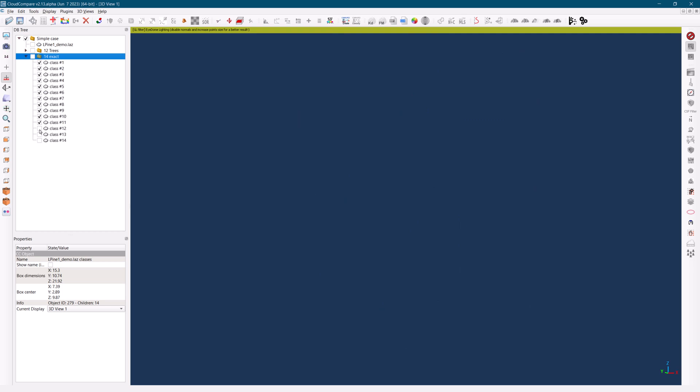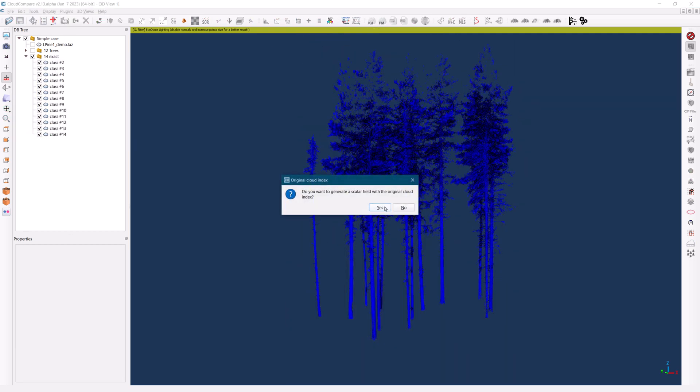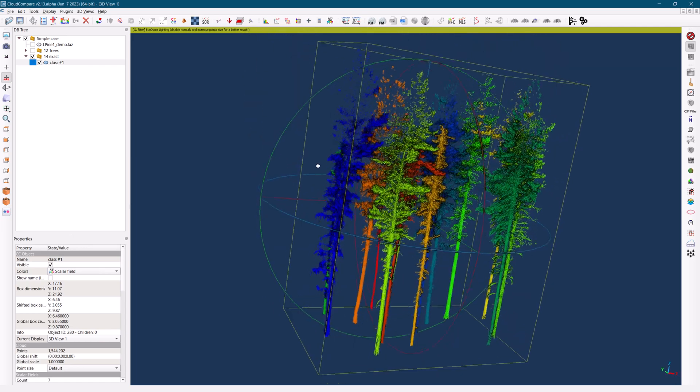It showcases how adjustments to parameters like regularization strength can improve the accuracy of tree isolation.